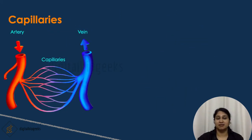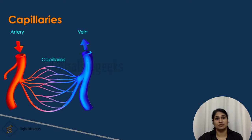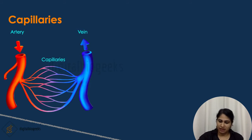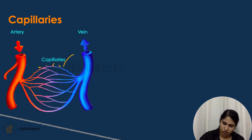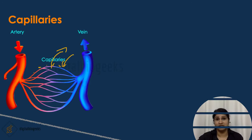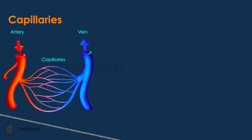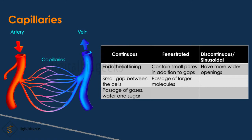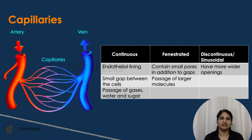Capillaries are tiny blood vessels that connect arteries and veins. Through capillaries, the exchange of gases, waste materials, and nutrients takes place between body tissues and the blood. The walls of capillaries have small pores that allow the passage of substances into and out of the capillaries through simple diffusion. There are three kinds of capillaries: continuous, fenestrated, and discontinuous or sinusoidal. Continuous capillaries contain endothelial cells with small gaps between them that help in the passage of gases, water, and sugar.